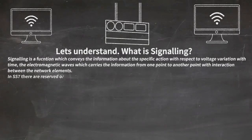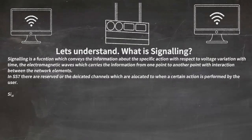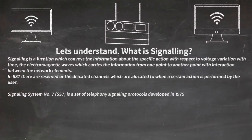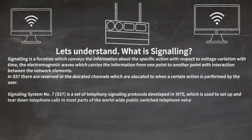In SS7 there are reserved or dedicated channels which are allocated when a certain action is performed by the user. Signaling System Number 7, referred to as SS7, is a set of telephony signaling protocols developed in 1975, used to set up and tear down telephone calls in most of the worldwide Public Switched Telephone Network (PSTN).